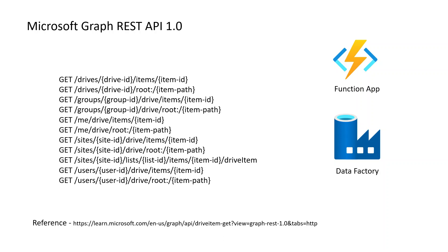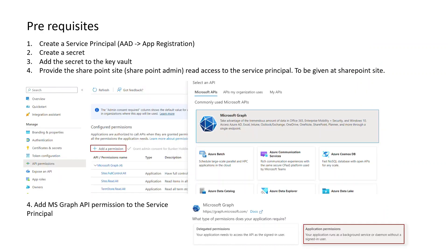In this tutorial we are going to use Data Factory, because downloading a file is part of a larger workflow. There are three prerequisites in order to do this. The first is to create a Service Principal — we need to open Azure Active Directory and register an application.